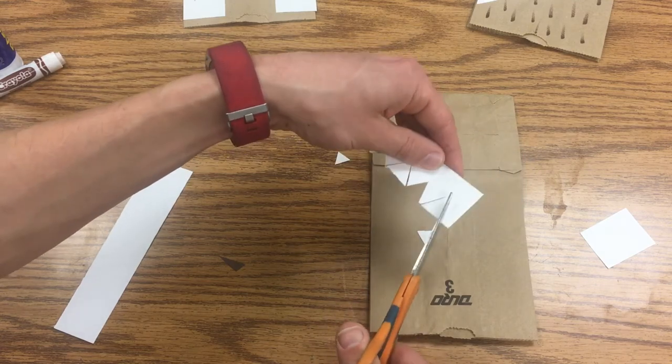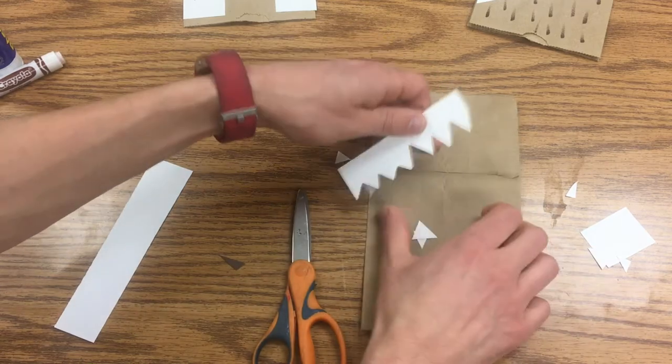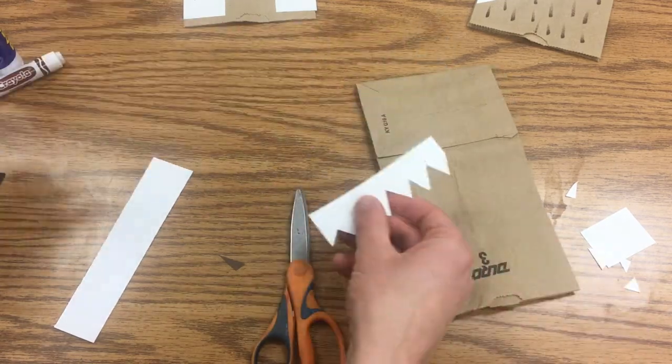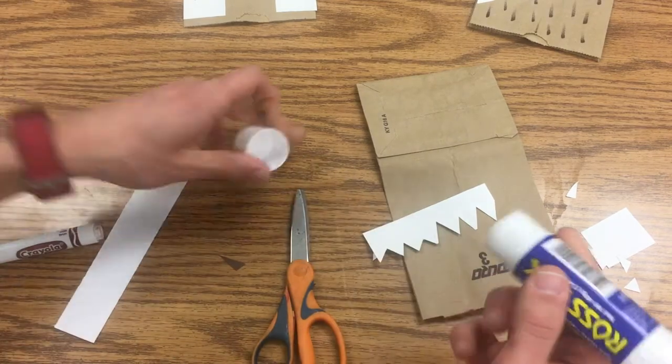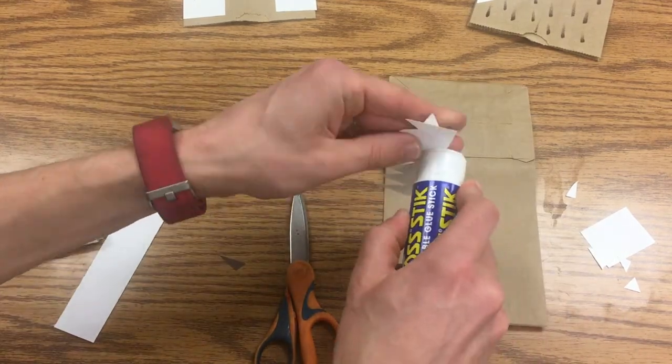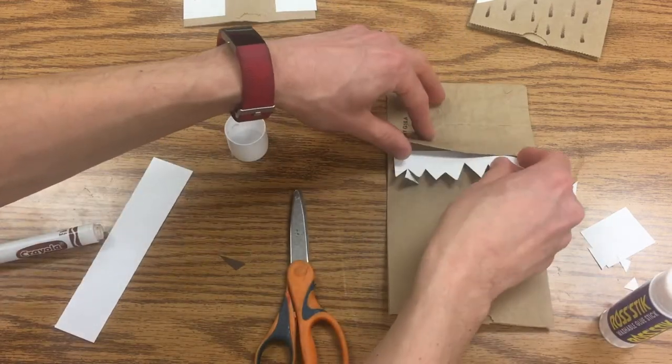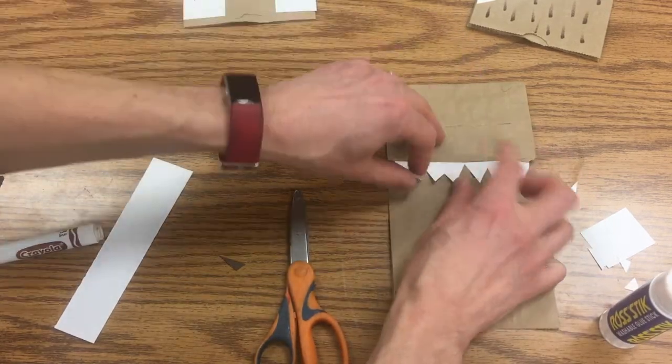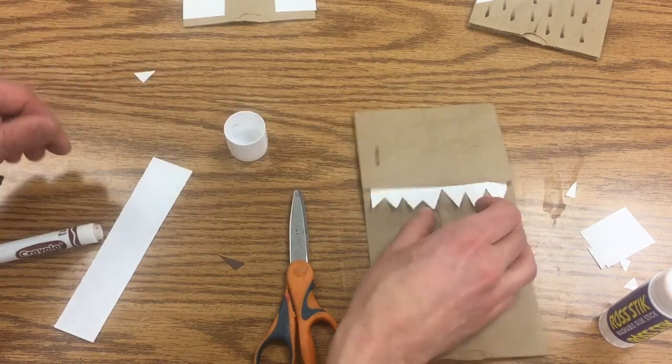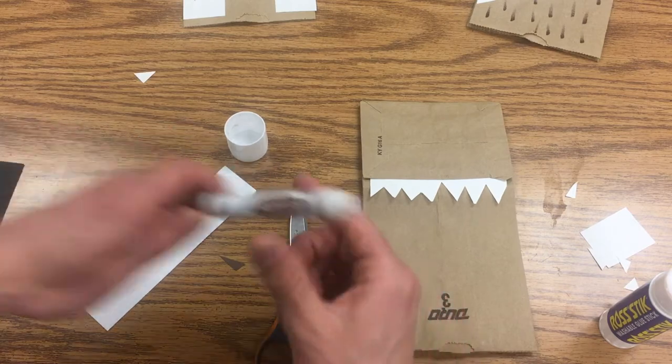Then I'm just gonna take some glue and run it along the top part of this and tuck it underneath and press. The next thing I'm gonna do is take a brown marker and start making fur on him because he's a fuzzy guy.